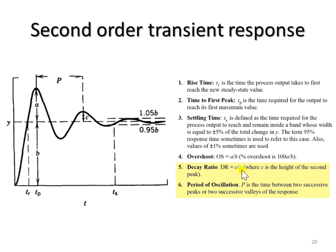The sixth parameter is the period of oscillation. The duration between the first peak and the second peak, measured in time, is considered as the period of oscillation.